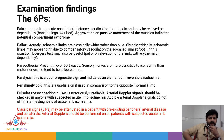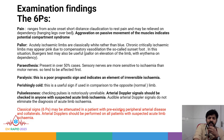The examination findings we always talk about are the six P's: pain, pallor, paresthesia, paralysis, perishing cold, and pulselessness. The classical six P's may be attenuated in patients with pre-existing peripheral arterial disease and collaterals. In all such cases, arterial Doppler should be performed. If you suspect acute limb ischemia, always do an arterial Doppler examination.